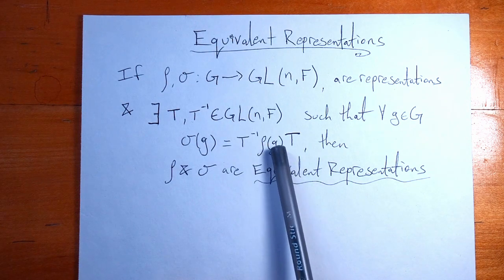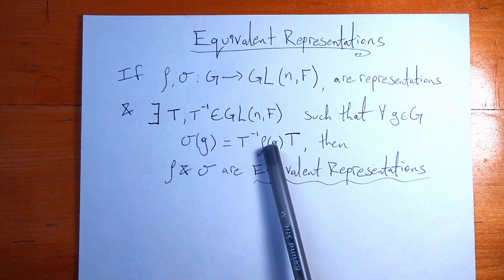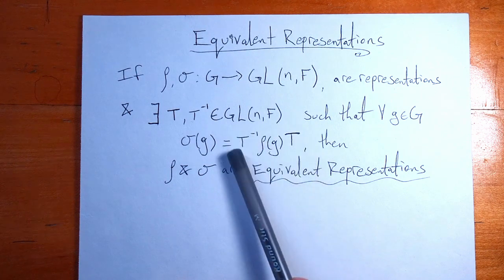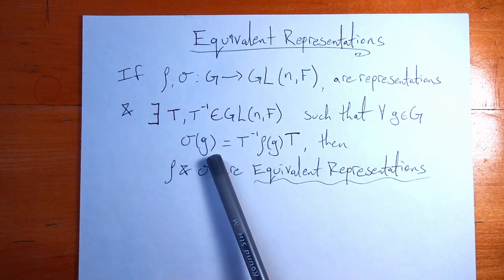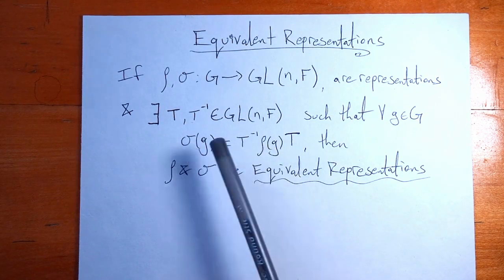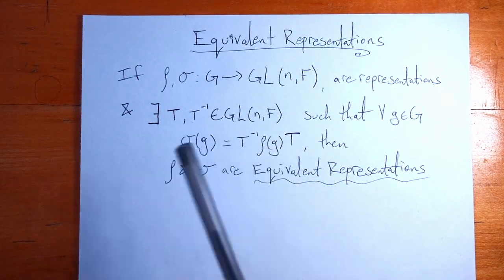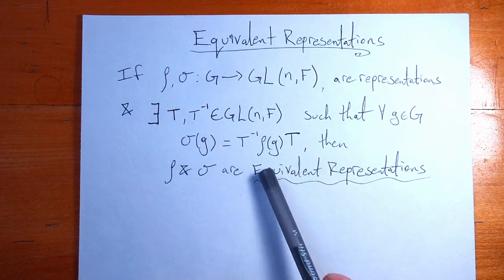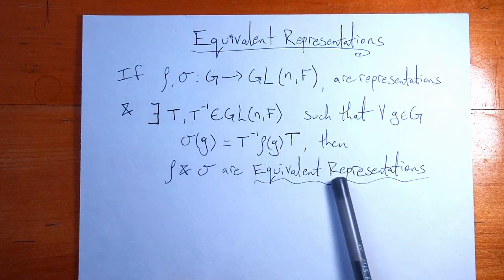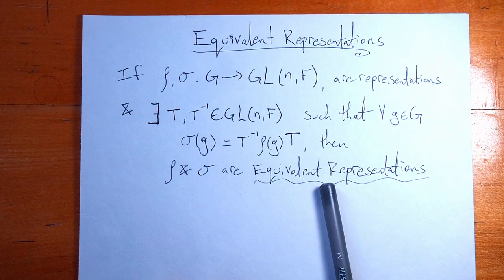This is just taking rho, this matrix, the matrix rho of G, and writing it in the new basis T, and so you get sigma. On a deeper level, rho of G and sigma of G are the same matrix, the same linear map, just written in two different bases. So I think it's worth going back and looking at some linear algebra before we continue looking at equivalent representations. I will give an example later.